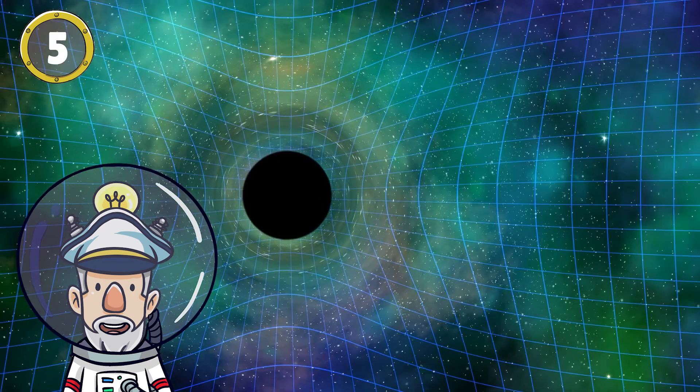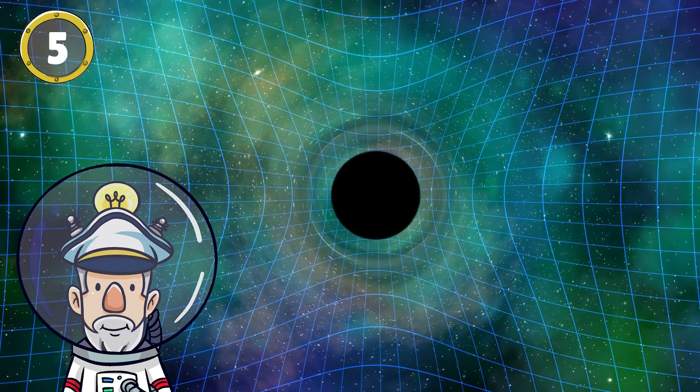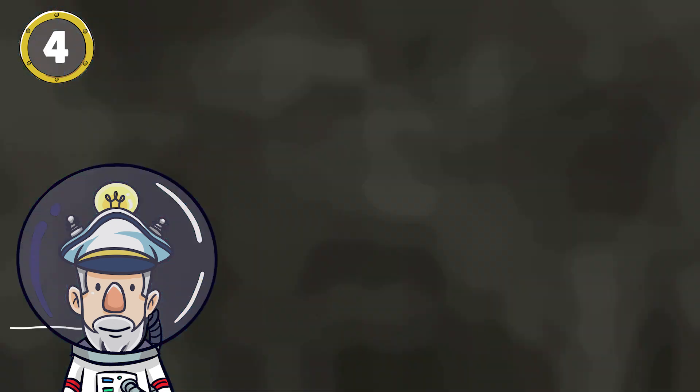Number 5: When something falls into a black hole, it can never come back out. This is because the gravitational pull is too powerful.